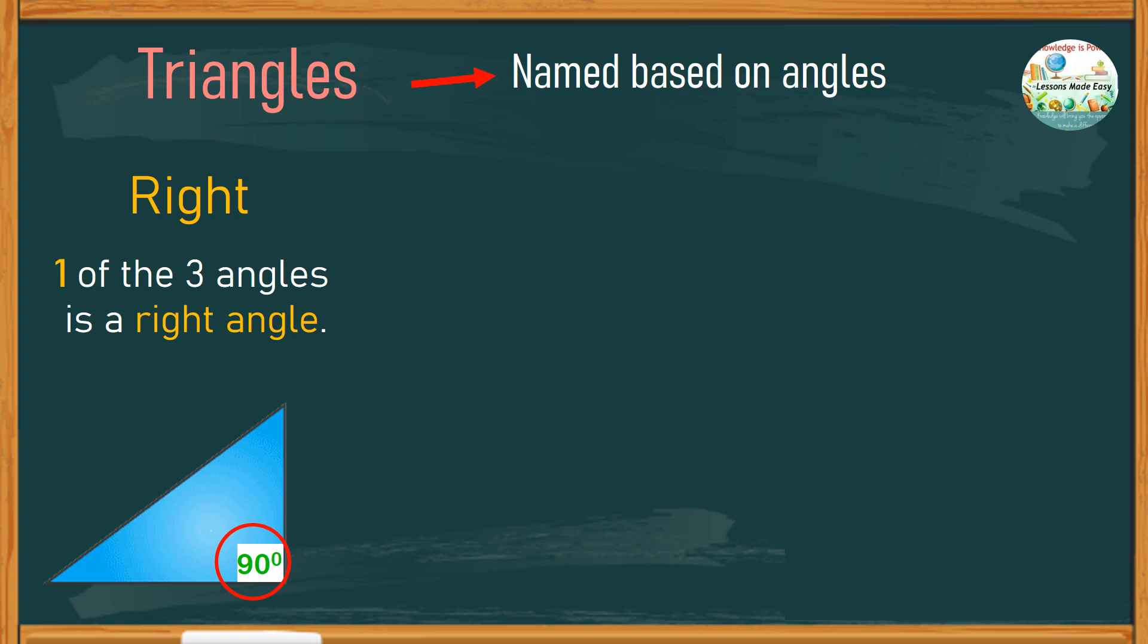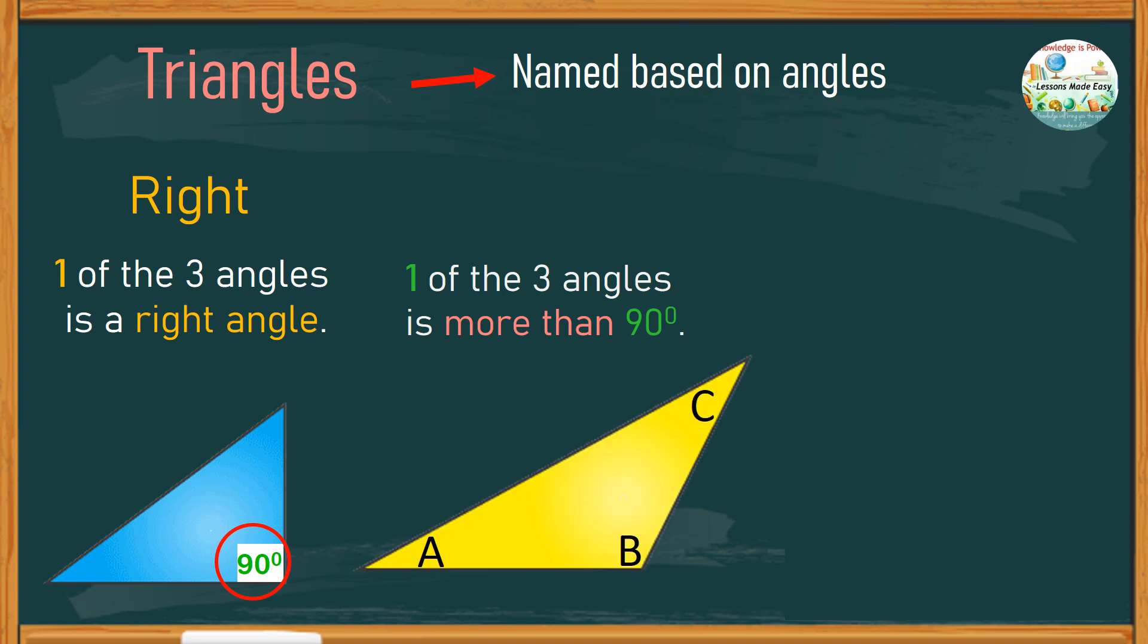But what about if one of the three angles is more than 90 degrees? Like this one. In this given triangle, angle P is clearly more than 90 degrees. So, we call this type of triangle an obtuse triangle. Let me say it one more time. If one of the three angles is more than 90 degrees, then it is called an obtuse triangle.